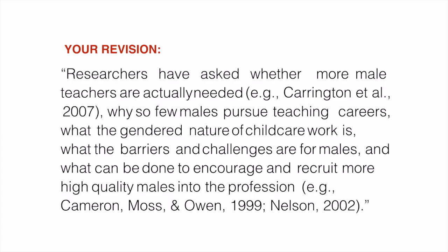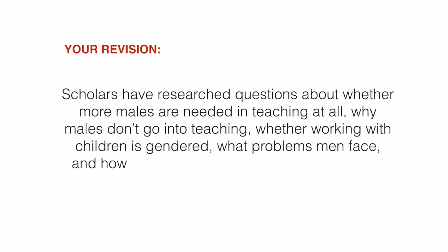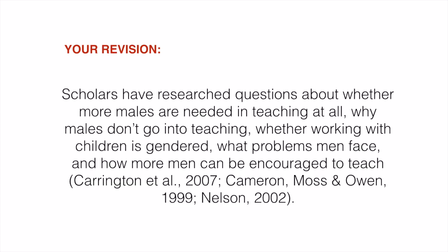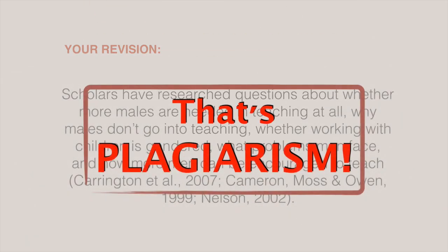So what about writing it a different way with all new words? For example: 'Scholars have researched questions about whether more males are needed in teaching at all, why males don't go into teaching, whether working with children is gendered, what problems men face, and how more men can be encouraged to teach.' Is that passage used correctly? Nope — that's still plagiarism. The passage still steals the idea, and unless you've read all those same references, you are dishonestly citing them. You've also still stolen the sentence structure, including having the same items in the list of research topics in basically the same order.